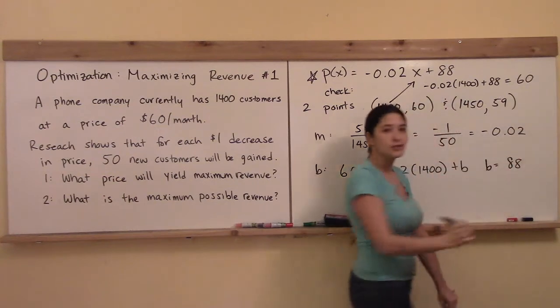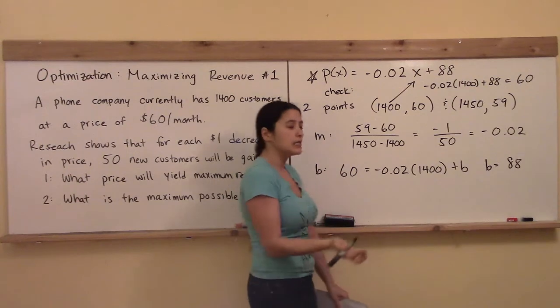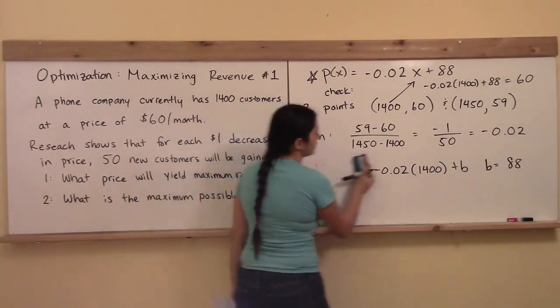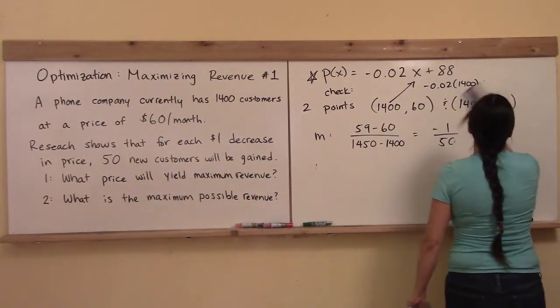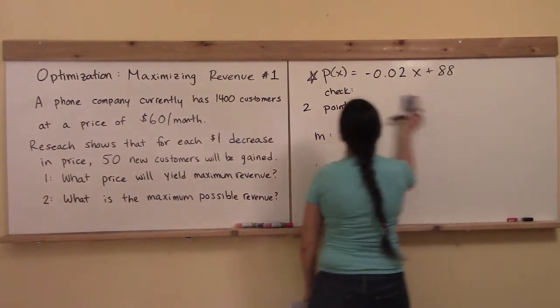Punching it into your calculator, you get 60. Nice. That's exactly what that point says it should be. And so I've checked it, so I'm confident in what I've got so far, and you can even check the other point if you want, and just make sure that you're correct before moving on to that next step.